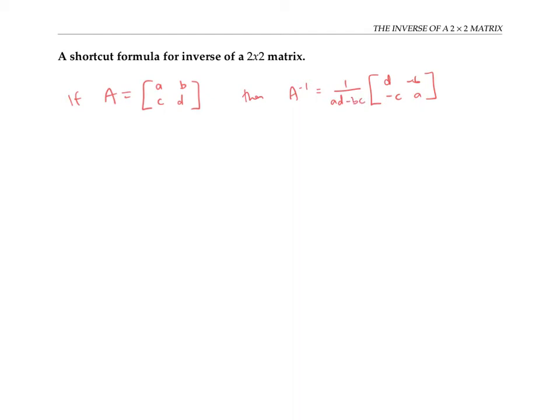To help remember this formula, notice that the entries in this diagonal have been swapped. The entries in that diagonal have stayed the same but gotten negative signs in front of them. And the whole thing is multiplied by one over this crisscross product, ad minus bc. This crisscross product is also known as the determinant of the two by two matrix.